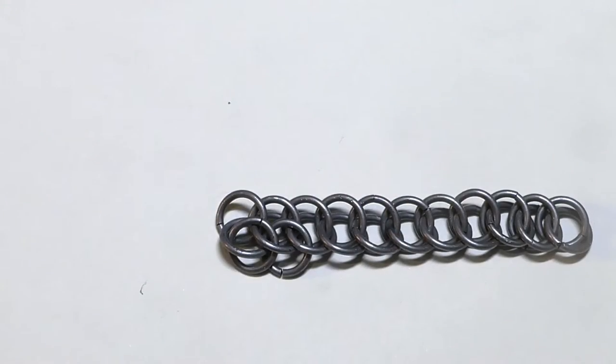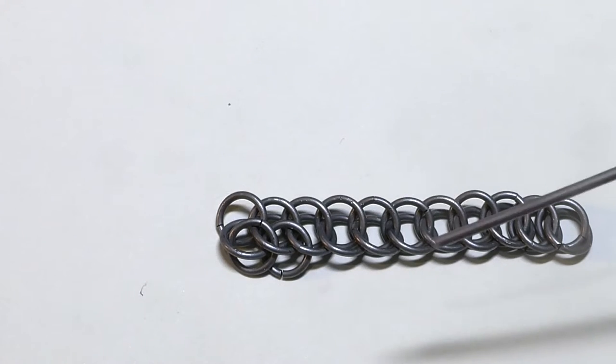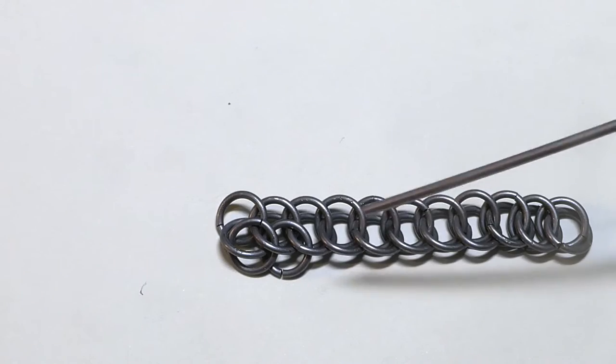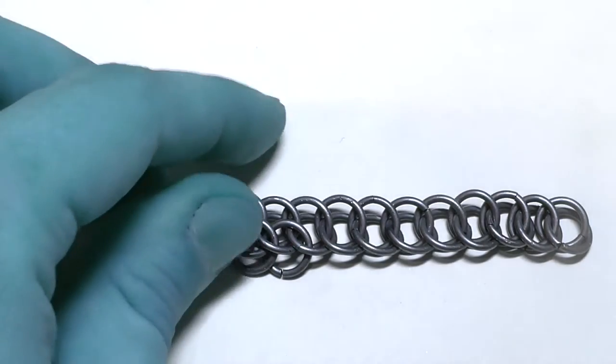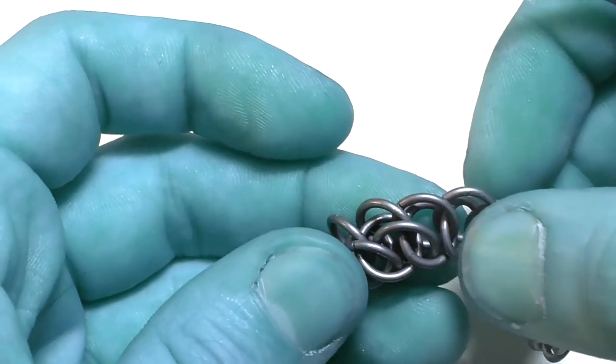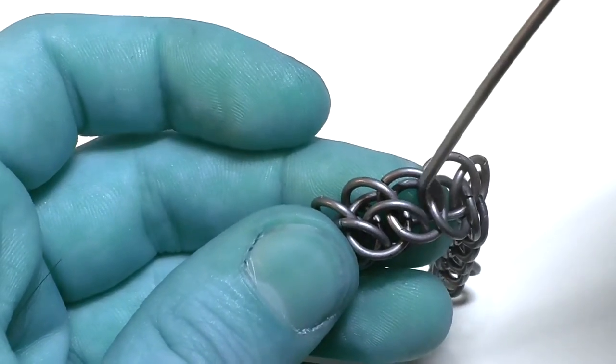Next ring, just as previous, will go through three rings. This one, this one and this one. And it will go also in the eye between this one and this one.